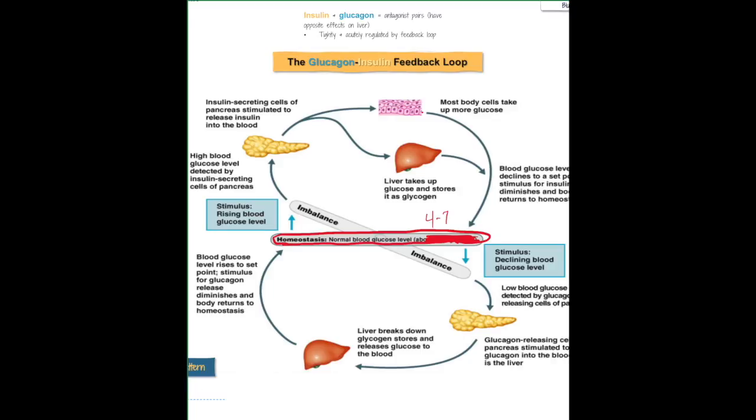So when there's an imbalance, for example, when the blood glucose increases, and again, this happens just when you eat. Sometimes it can happen when you're experiencing a fight or flight response to something. Your glucose can also increase when you're experiencing an infection or illness. So for whatever reason, the glucose has increased in the blood.